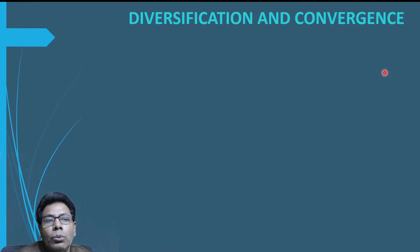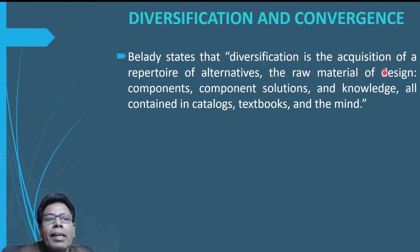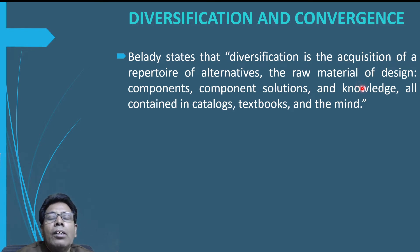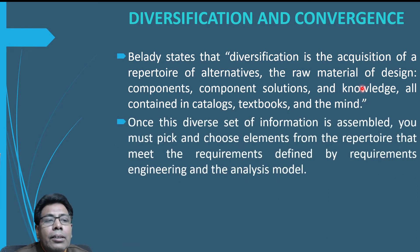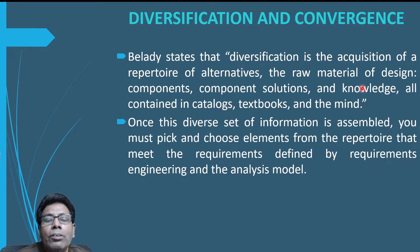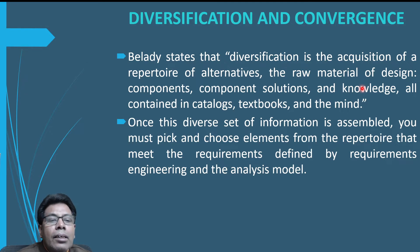Let us go to the two terms: diversification and convergence. Belade states that diversification is the acquisition of a repertoire of alternatives — that means we should have different alternatives for the raw material of the design, which includes components, component solutions and knowledge, all of which are contained in catalogs, pattern books and in the mind. We should have alternatives for that. Once the diverse set of information is assembled, you can then pick and choose elements from it as per the requirements defined by requirement engineering and analysis model.